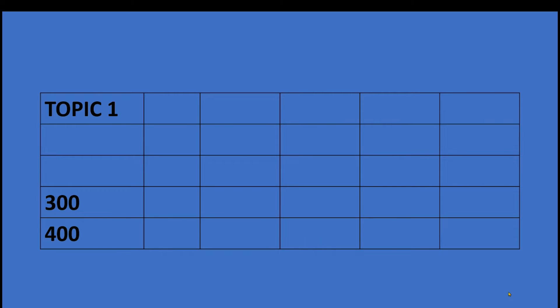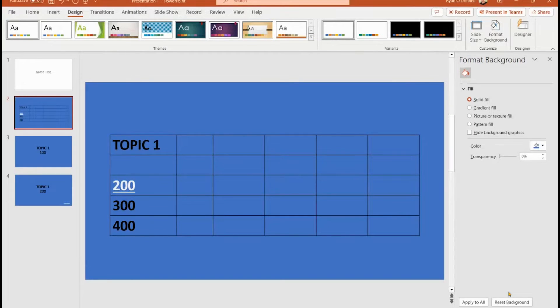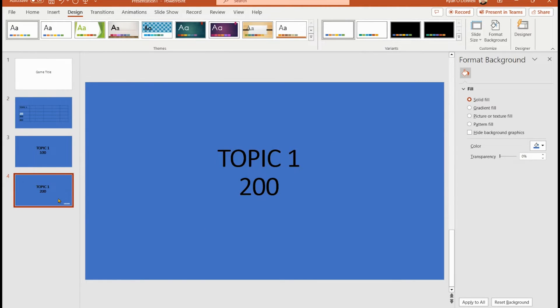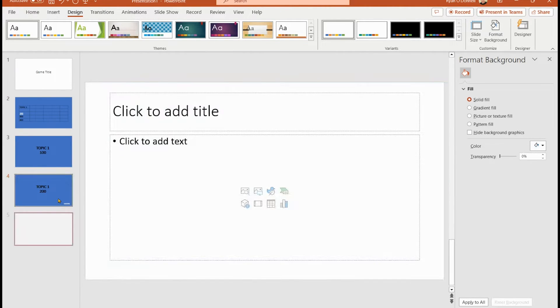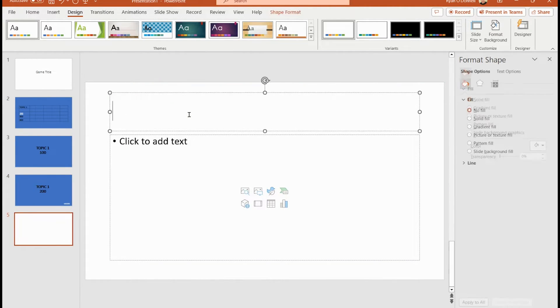Clicking 200 jumps to Topic One 200, clicking back returns to the board, and that option is now visually gone. It's a great way to hide links that are still actually there. Now let's try the second way — actually making them disappear.